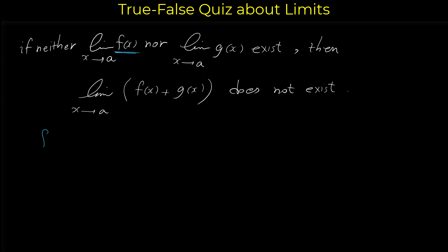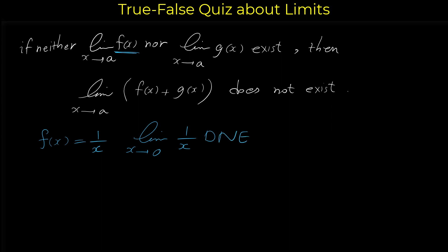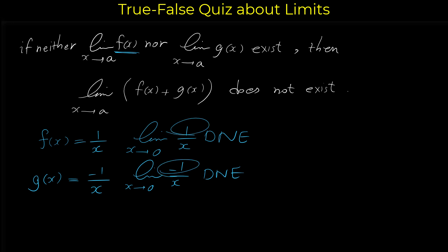Suppose the function f(x) to be 1/x and suppose a to be 0. The limit of f(x) = 1/x as x approaches 0 does not exist. Let's suppose g(x) to be -1/x. The limit of -1/x as x approaches 0 also does not exist, because in the numerator we have a non-zero number and the denominator approaches 0 — non-zero over 0 means the limit does not exist.